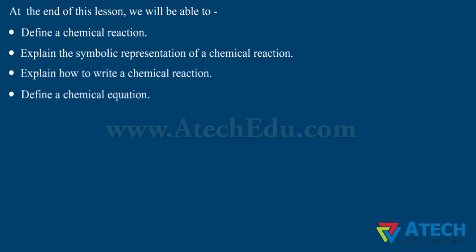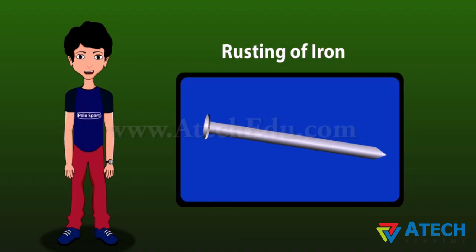We will also define a chemical equation and balance a chemical reaction. What do you observe when an iron nail is exposed to a humid atmosphere?